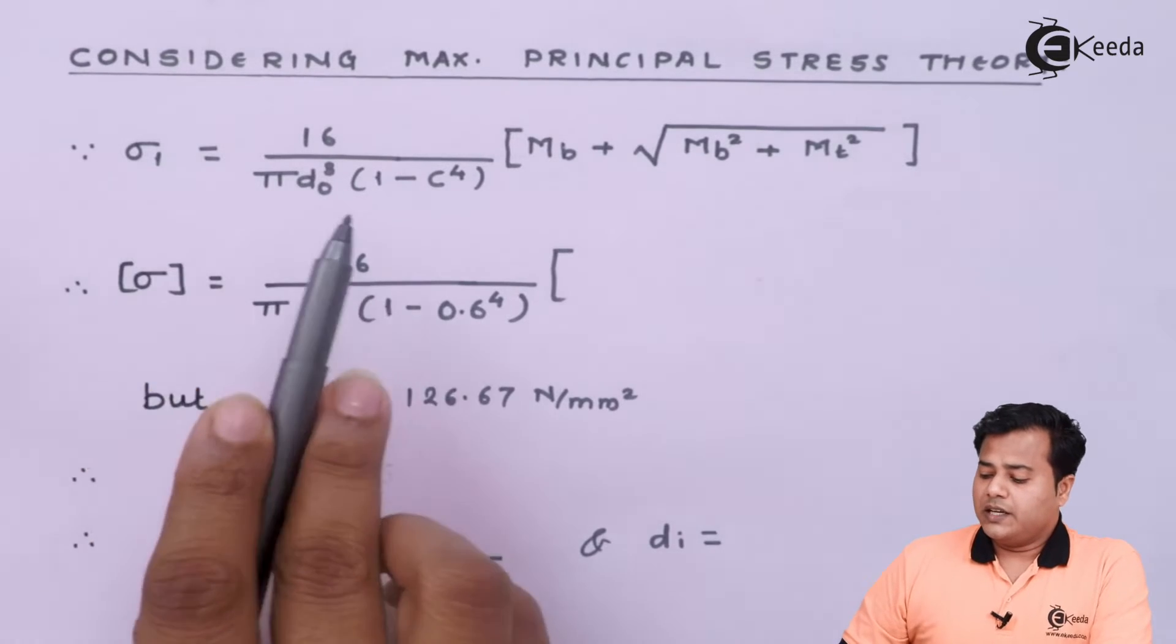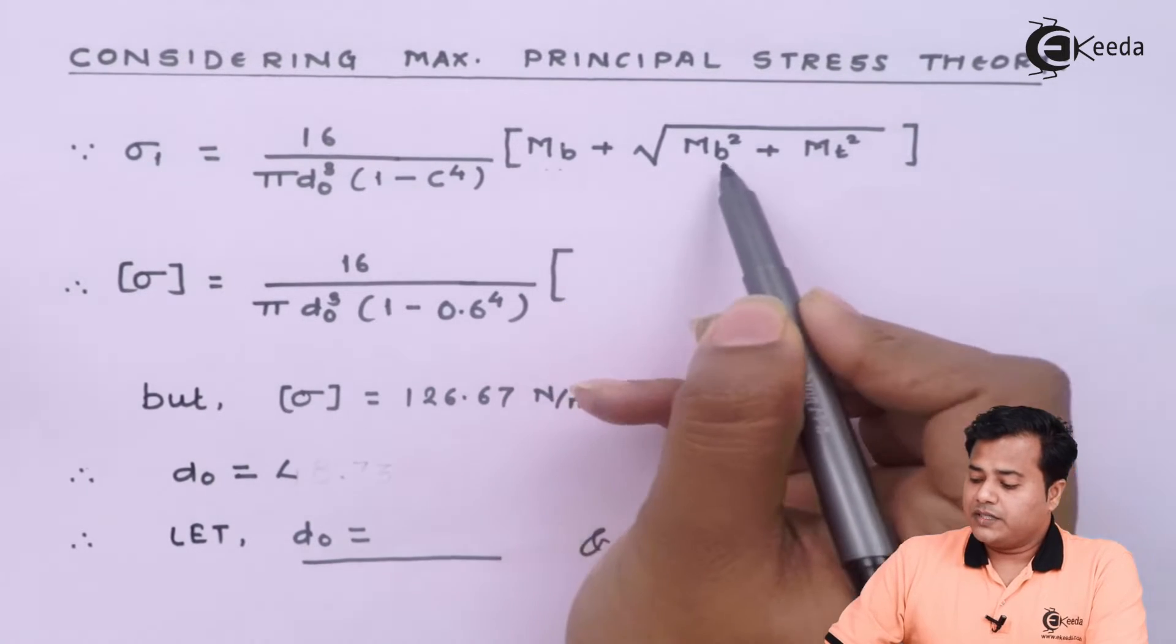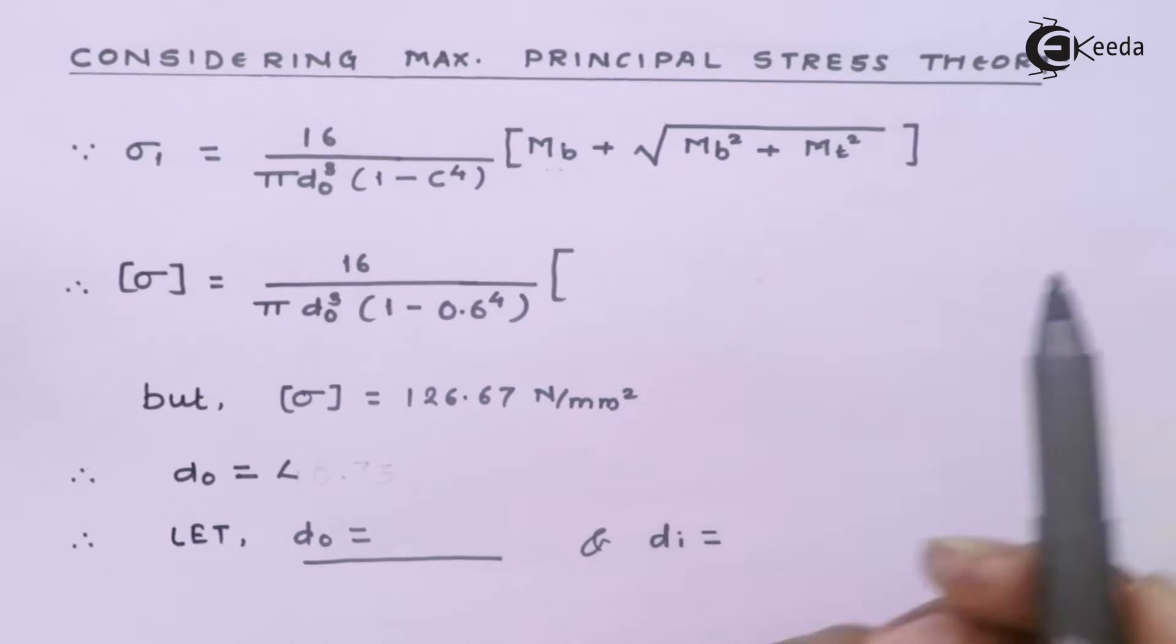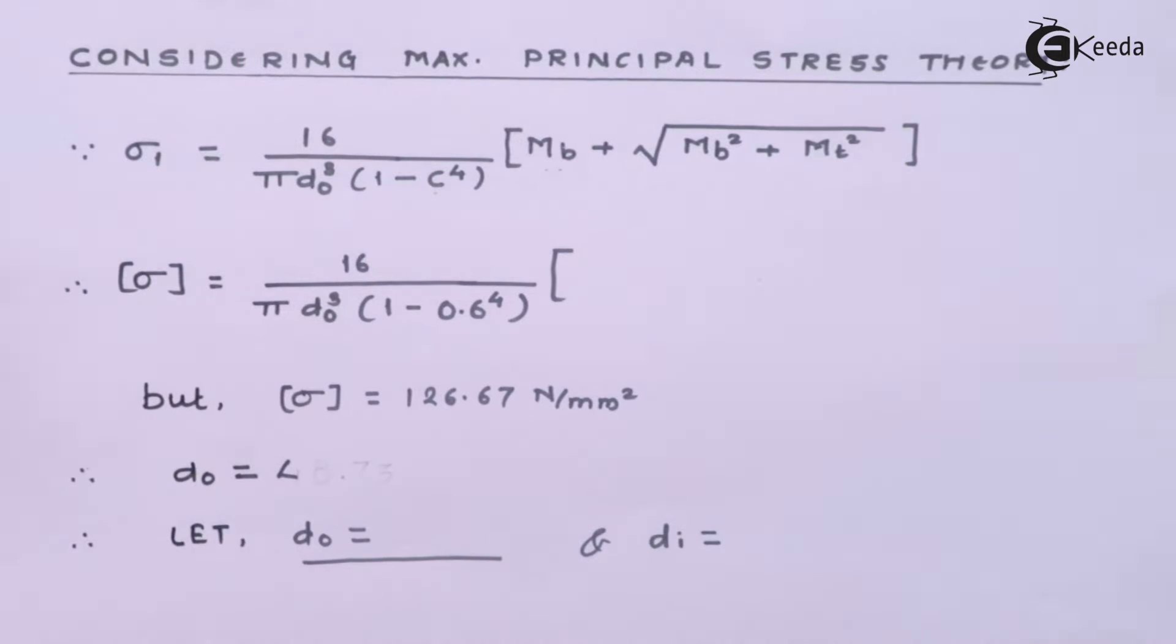So in this case we already have figured out this equation. You can refer to the earlier session where the formulas are described where this is the bending moment and this is the torsional moment. Where c is the factor we have been given and outer diameter is what we need to figure out.